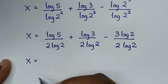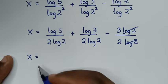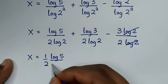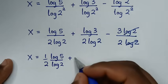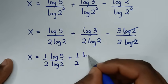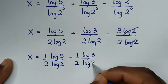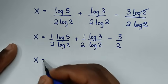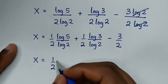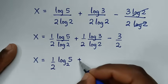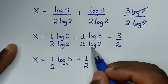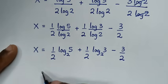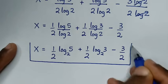Simplifying, the log(2) terms cancel, giving x equals (1/2)·(log(5)/log(2)) plus (1/2)·(log(3)/log(2)) minus 3/2. Using the change of base formula, this is x equals (1/2)·log₂(5) plus (1/2)·log₂(3) minus 3/2. This is the final answer for the value of x.